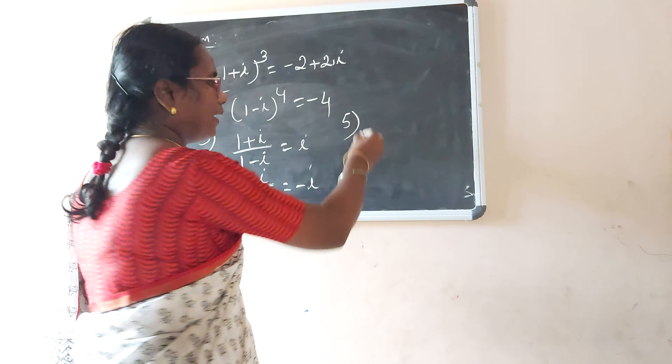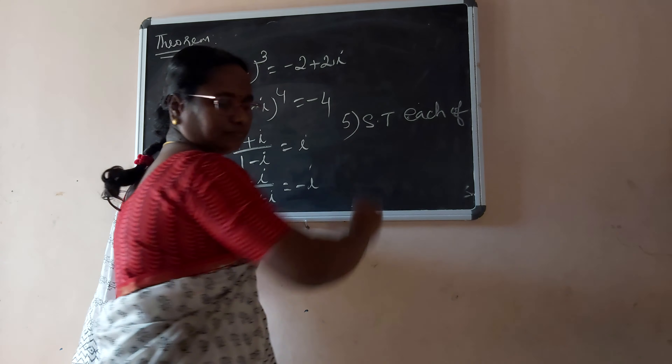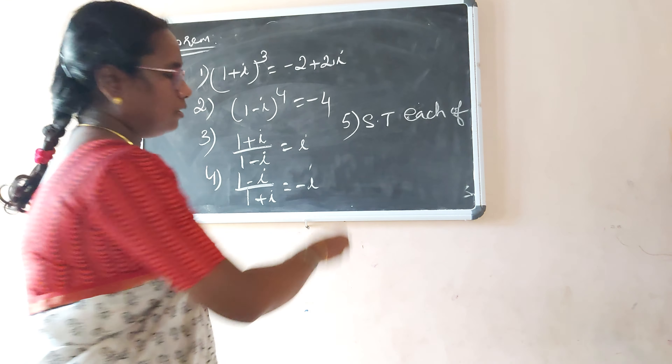Now some homework problems. First: (1 plus i) squared equals minus 2 plus 2i. Second: (1 minus i) to the power 4 equals minus 4. Third: (1 plus i) divided by (1 minus i) equals i. Fourth: (1 minus i) divided by (1 plus i) equals minus i.